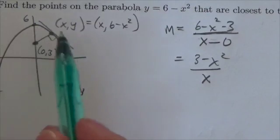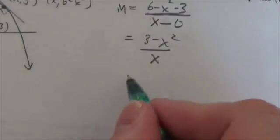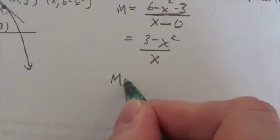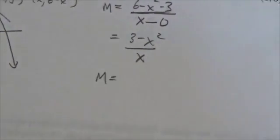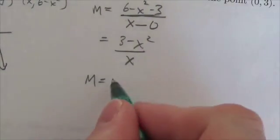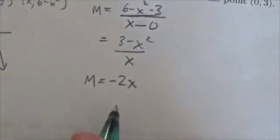So right here this is a simplified expression for the slope of that line segment. And so now if we find the slope of the tangent line to the parabola, the slope of that tangent line is simply going to be the derivative of the function, and in this case that's just going to be negative 2x.